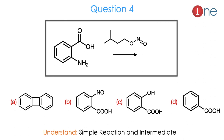Then question number 4. The starting material is anthranilic acid. We are using amyl nitrate — here amyl nitrate is present and an amino group is there. They ask you to find the product which is formed. The products are very complicated, but if you understand the reaction very well, it is a simple reaction with a stable intermediate.